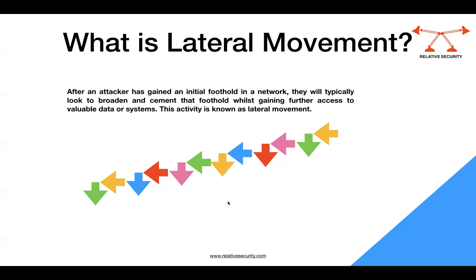This first machine that was compromised is called patient zero, because that's where the infection of your environment is getting started. Once you have a compromised machine, the attacker is going to move through your network from one machine to another, trying to compromise as many machines as possible, trying to escalate his level of privileges — from maybe a user account to a domain account to administrators of the servers — trying to gather as much power as he can. This all movement is called lateral movement.